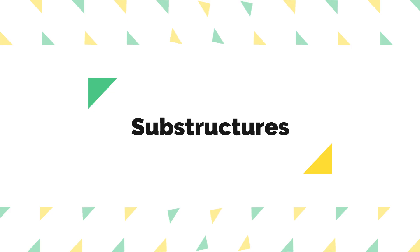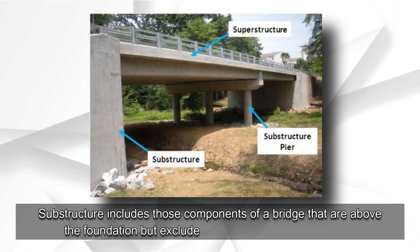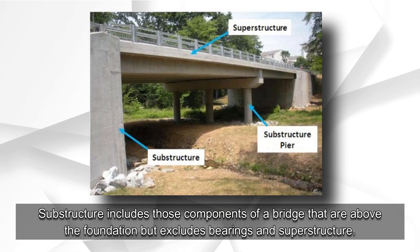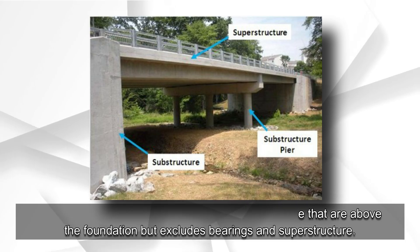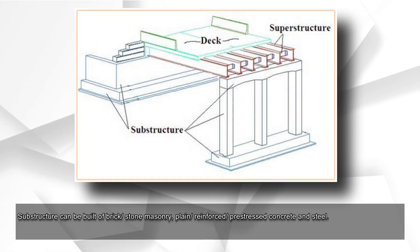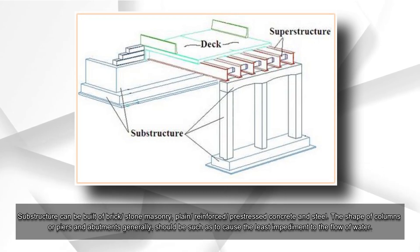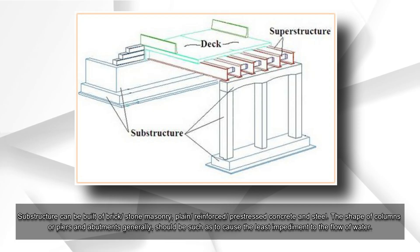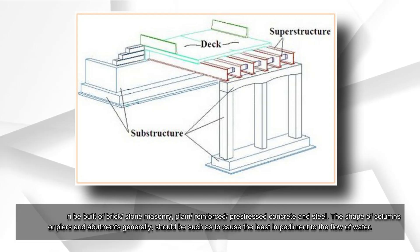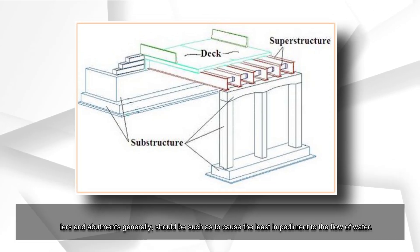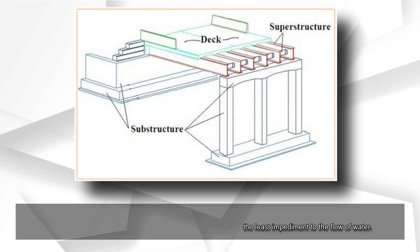Substructures. Substructure includes those components of a bridge that are above the foundation but excludes bearings and superstructure. Substructure can be built of brick or stone masonry, plain, reinforced, or pre-stressed concrete, and steel. The shape of columns or piers and abutments generally should be such as to cause the least impediment to the flow of water.